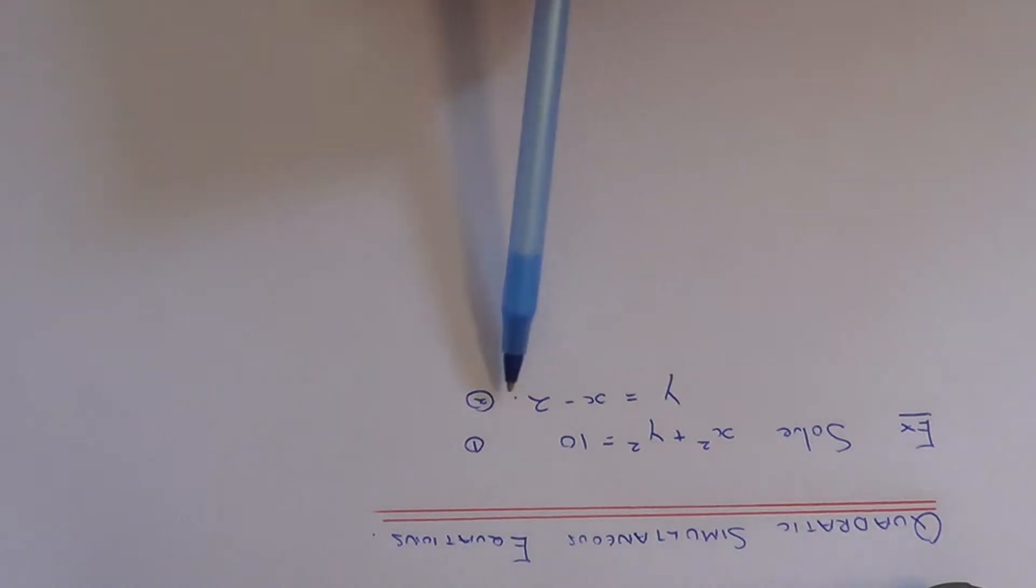So if you notice, y is the subject of the second equation which we have. So the easiest thing to do will be to change the y in the first equation with x minus 2. So we're going to substitute x minus 2 into this first equation.